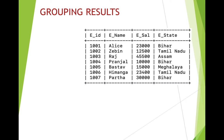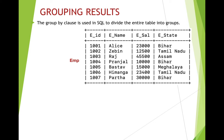Let's say we have this table — the name of the table is emp table. The GROUP BY clause is used in SQL to divide the entire table into groups. For example, let's say we want to find out how many persons are there from each state. From Bihar there are three persons, from Assam one, from Tamil Nadu two, and from Meghalaya one.